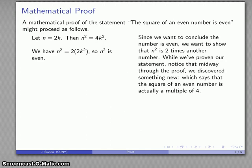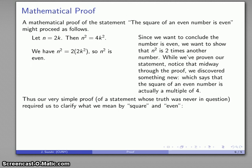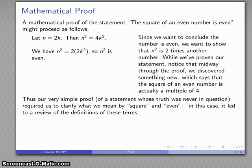And here in a nutshell is the reason why mathematical proof is important. Our very simple proof of a statement whose truth is never in doubt. We had to clarify what we mean by square. We had to clarify what we meant by even. We had to review what we knew about these things. And we also discovered something brand new that we might not have seen before. That the square of an even number is not just even but it's also a multiple of four.